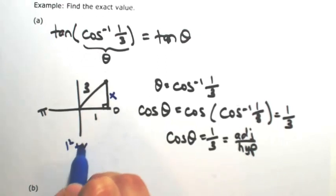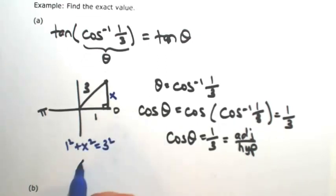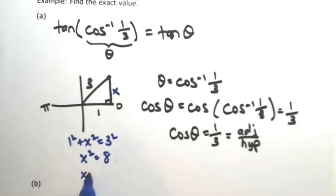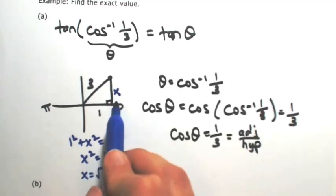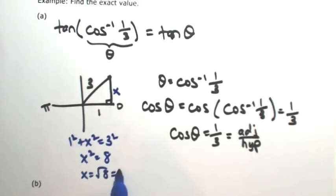So 1 squared plus x squared is 3 squared. So that x squared is 9 minus 1, which is 8. So x is square root of 8, and it's positive because it's in the first quadrant, or 2 square root of 2.